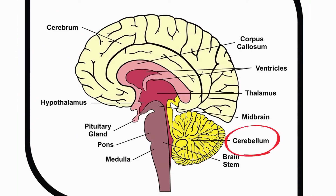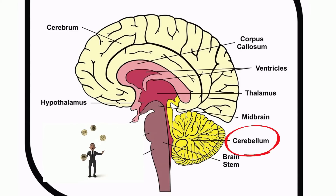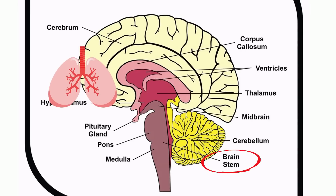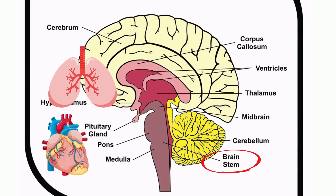The cerebellum is located at the back of the brain and is responsible for coordination and balance. The brain stem is located at the base of the brain and connects the brain to the spinal cord. It's responsible for vital functions such as breathing, heart rate, and blood pressure.